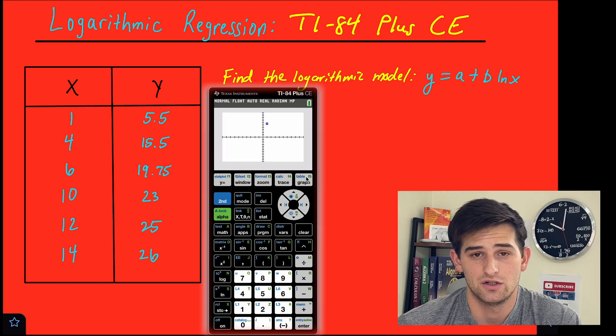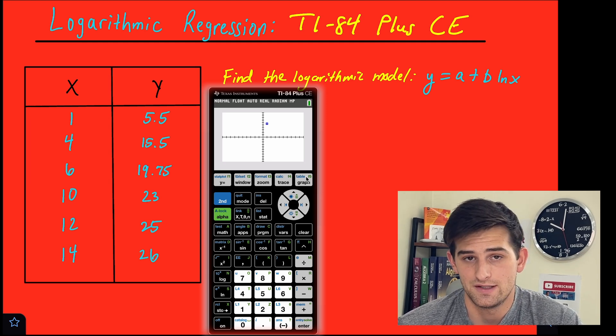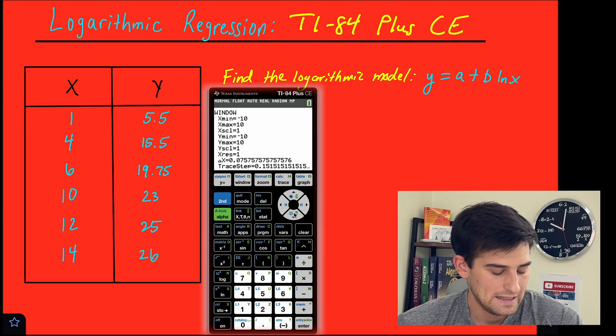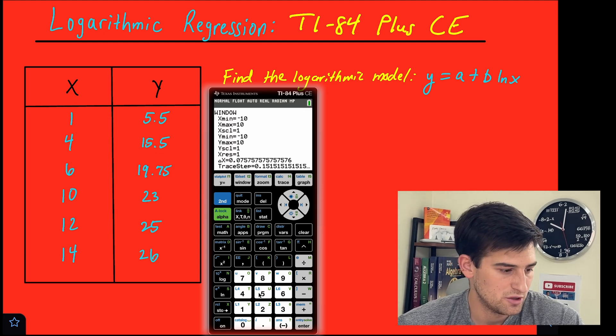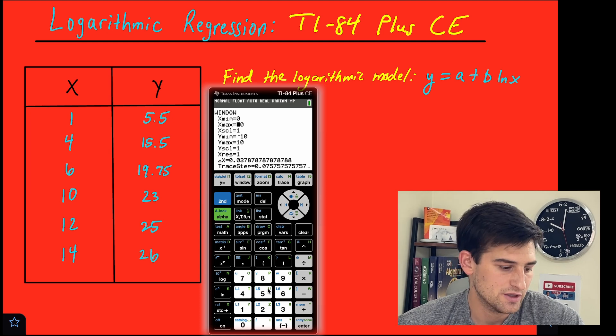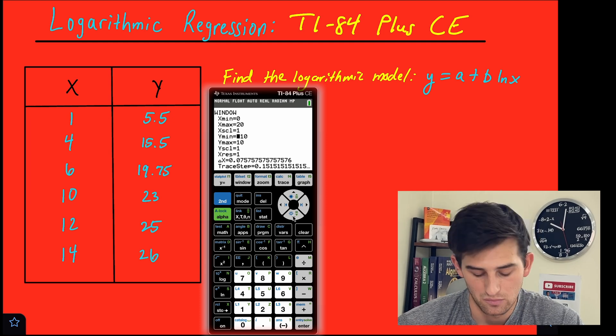Because there's another thing we need to make sure of is our window. Make sure it is large enough to see all of the points that we have just inserted in our scatter plot. So we go to window, and if we look at our x values, the lowest point we need to see is 1. So let's just change that to 0. But we need to see all the way to 14. So let's just change that to 20 so that we have enough room a little bit past 14.